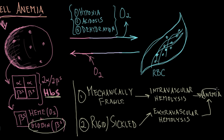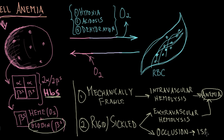Anemia is the hallmark symptom of the disease. But the rigid and sickled red blood cells also cause occlusion of blood vessels, which causes ischemia — and that is responsible for many of the acute symptoms of the disease.